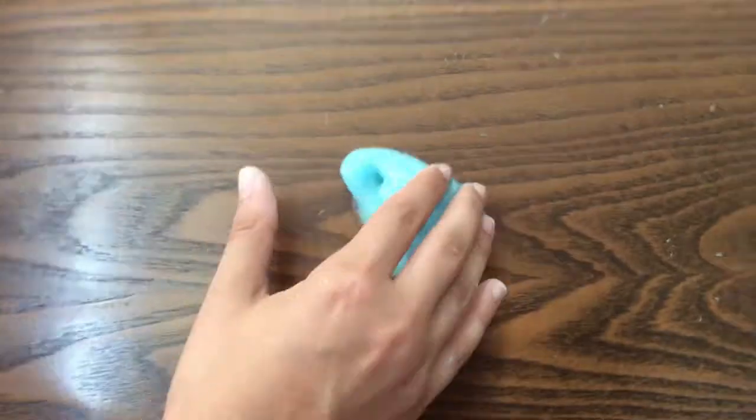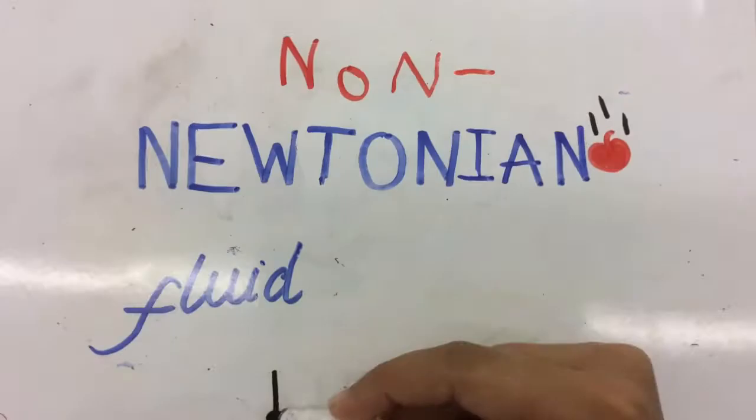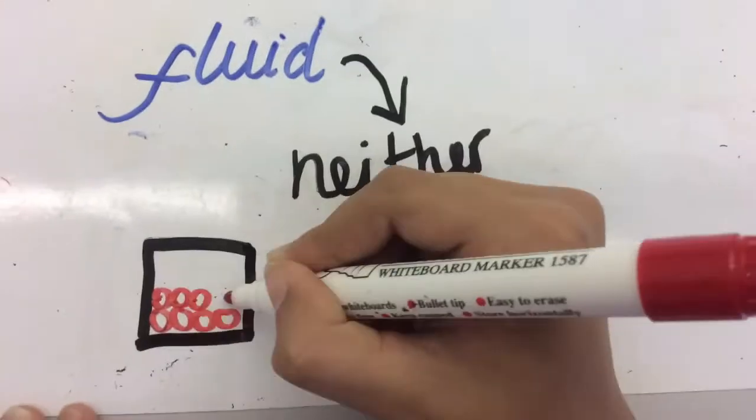What is the science behind this? Slime is a non-Newtonian fluid, meaning it's neither solid or liquid, but somewhere in between.